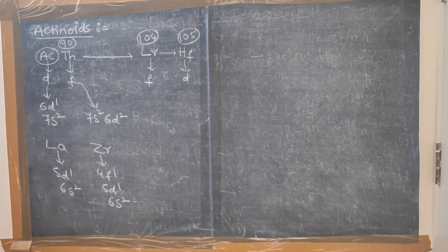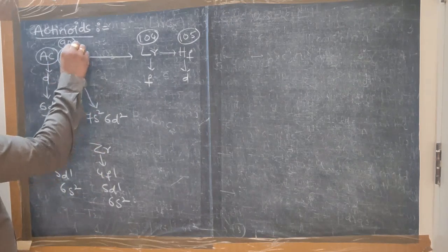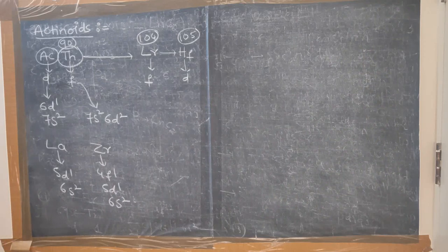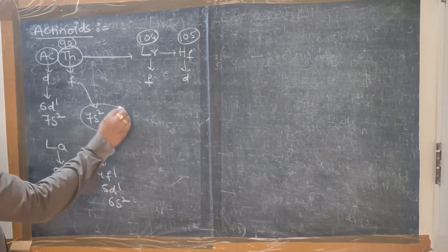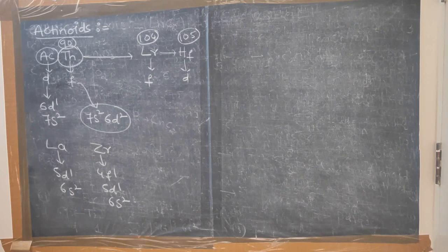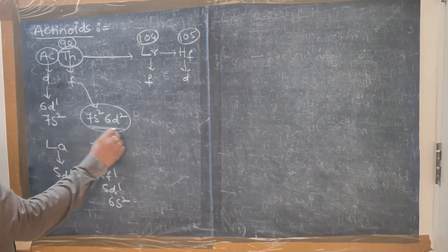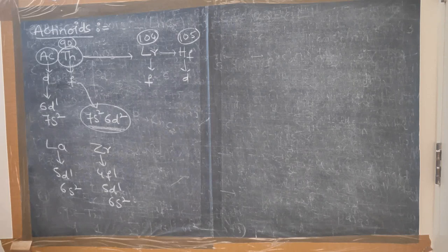Thorium's configuration is 7S2, 6D2. An important exam question: which F-block element does not contain electrons in the F sub-shell? The answer is thorium (7S2, 6D2), which has no F electrons. All remaining actinides contain F electrons.